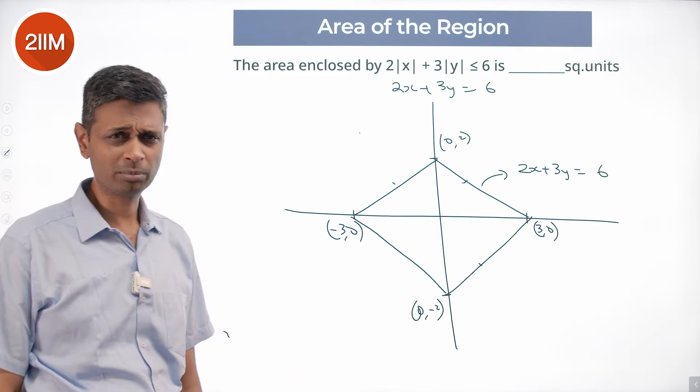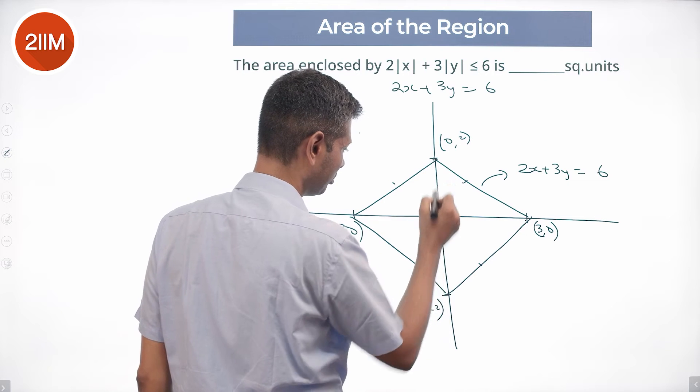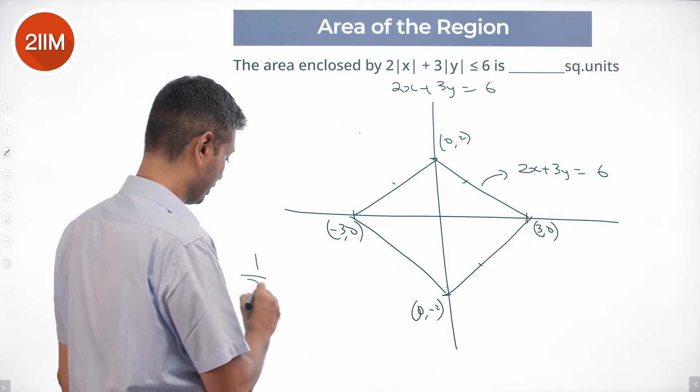The nice little rhombus, this being 6, this being 4. Area is half into product of diagonals.